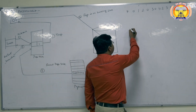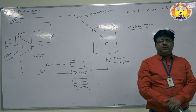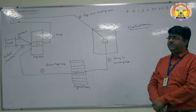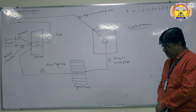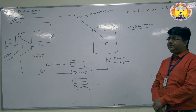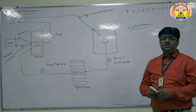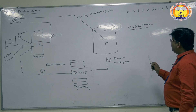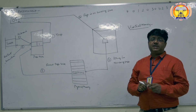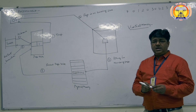First, we discuss virtual memory. We know that when we have to execute any process, that process must be brought into the physical memory or primary memory for execution. Suppose we have a program whose size is larger than the size of main memory — it will be very difficult to execute that program. To execute such a program, we use the concept of virtual memory. In virtual memory, we use a conceptual memory that doesn't exist physically, meaning we don't bring the whole program into main memory at once.